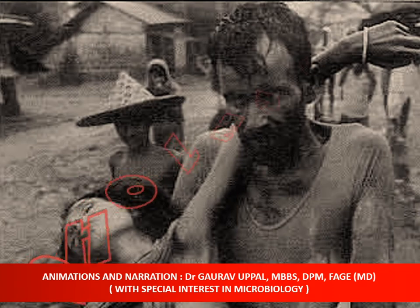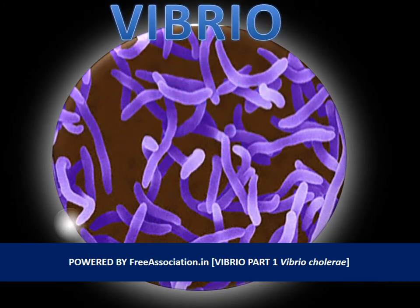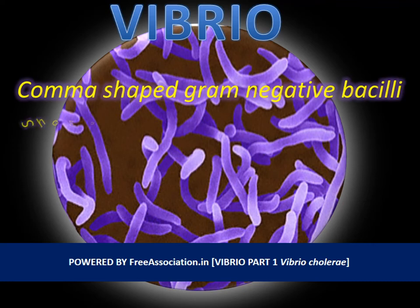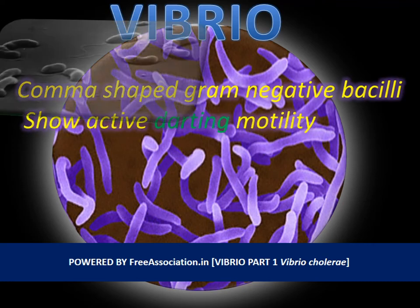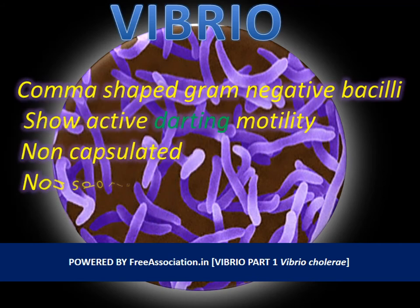This may cause epidemics like cholera. They are called genus Vibrio. They have certain genus characteristics: they are comma-shaped gram-negative bacilli. They have active darting motility due to the presence of polar flagella. They are non-capsulated and non-sporing. The most important member is Vibrio cholerae.